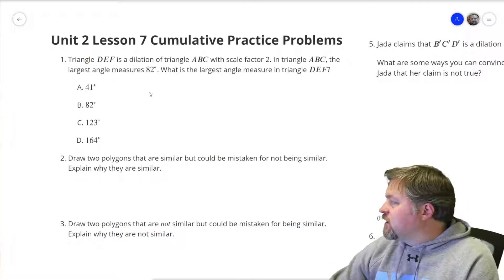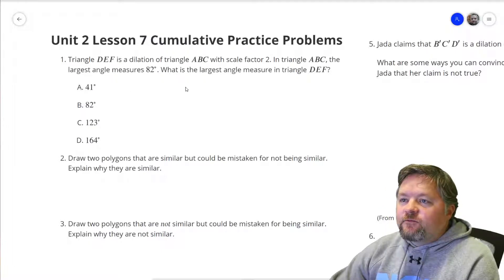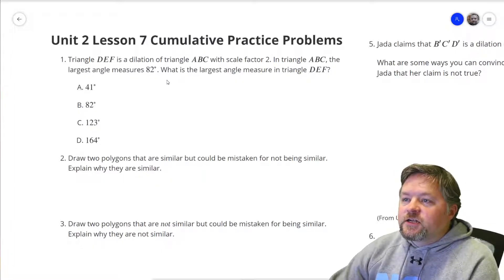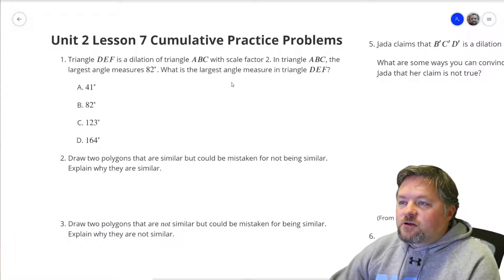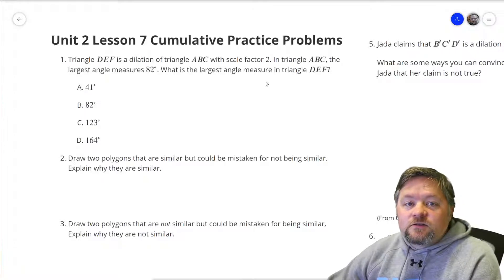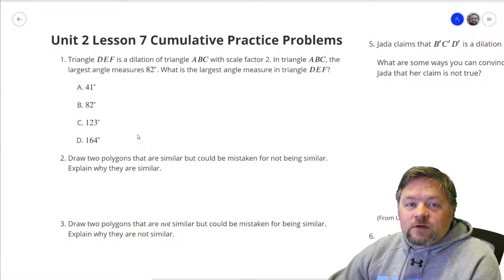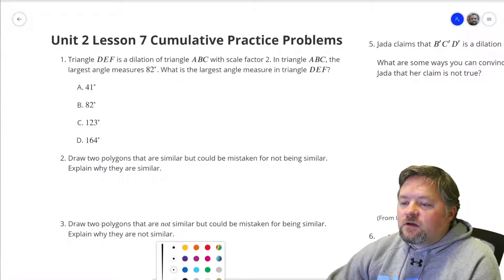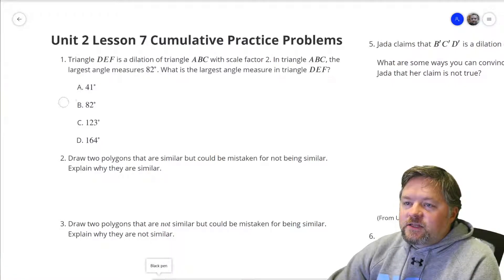Our first question here says triangle DEF is a dilation of triangle ABC with a scale factor of 2. In triangle ABC, the largest angle measure is 82 degrees. What's the largest angle measure in triangle DEF? Well, do the angles change when we dilate something? No, they don't. What's our largest angle? It's going to be the same.